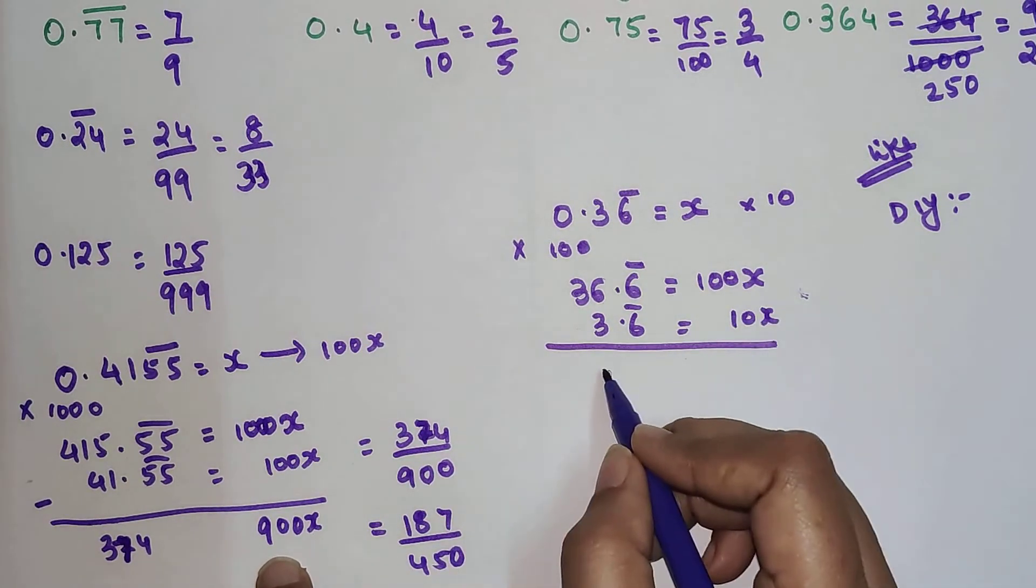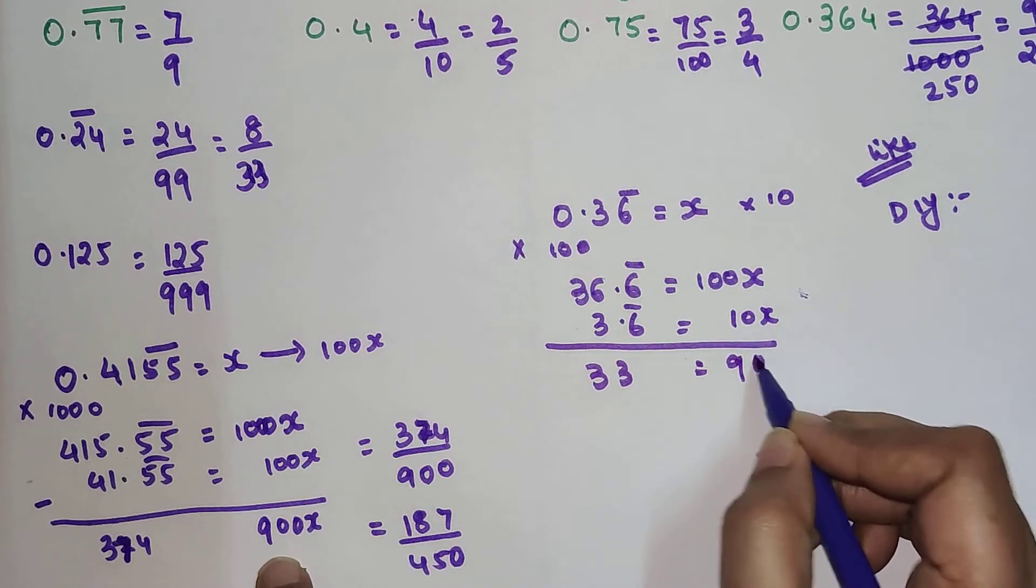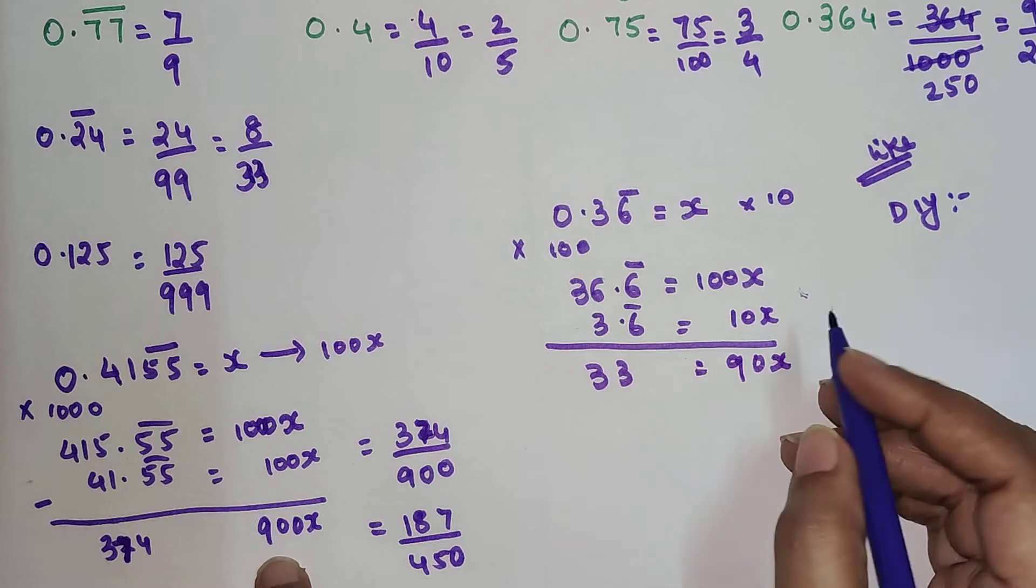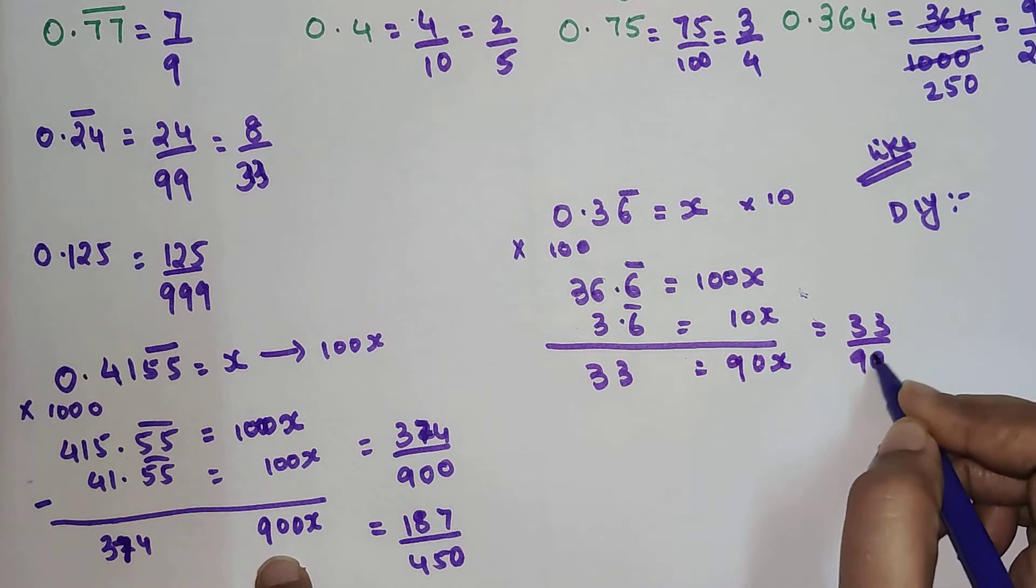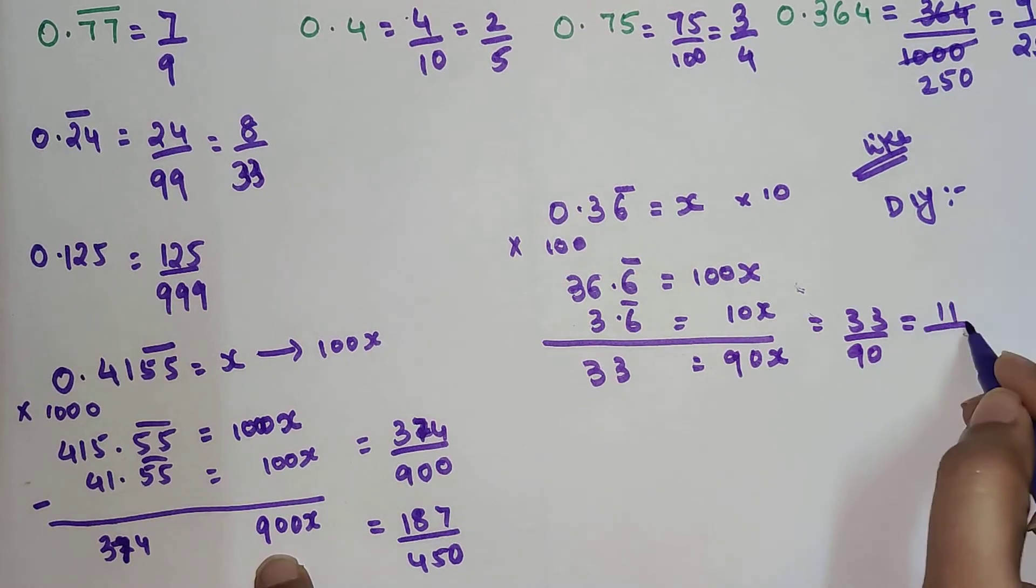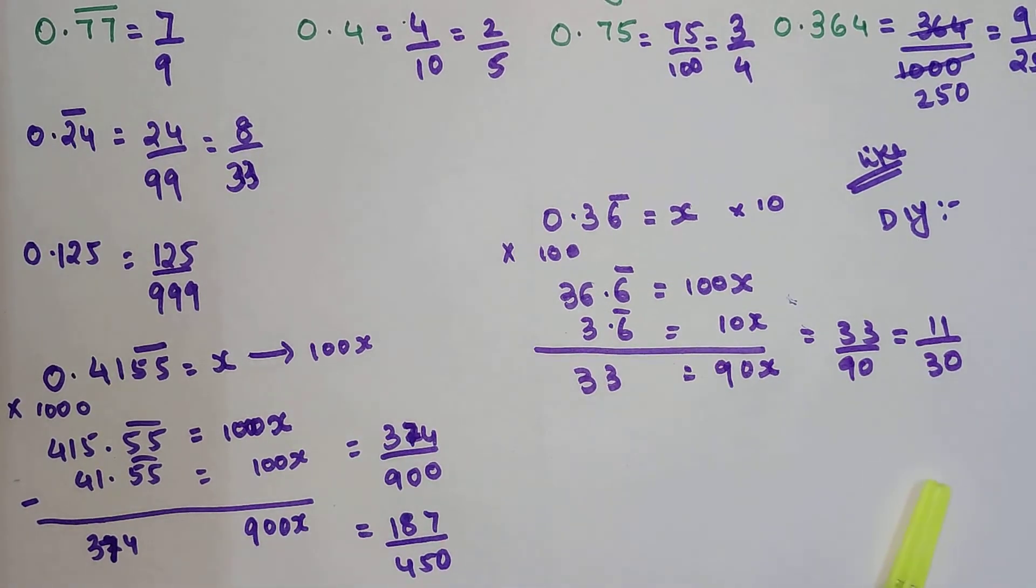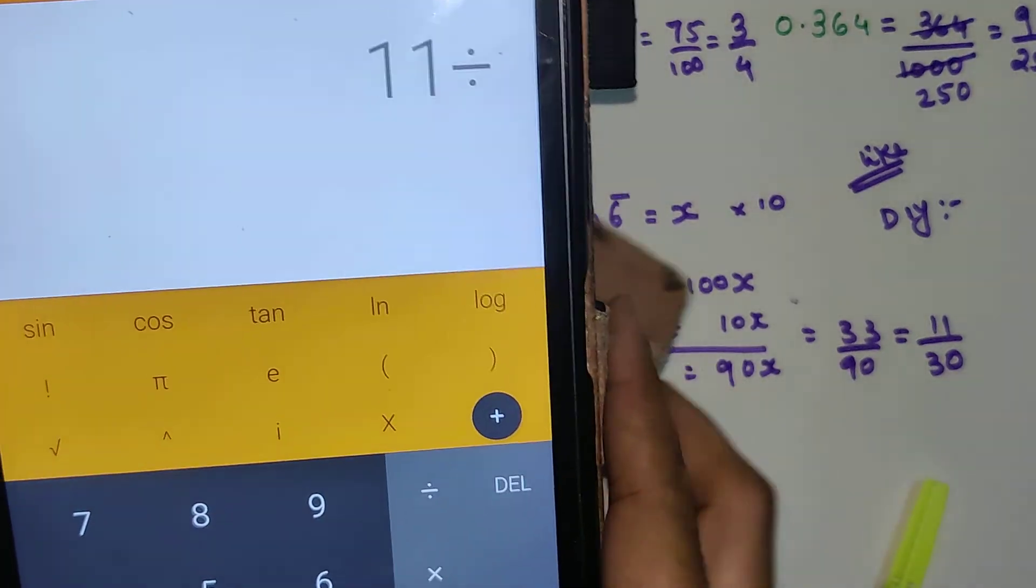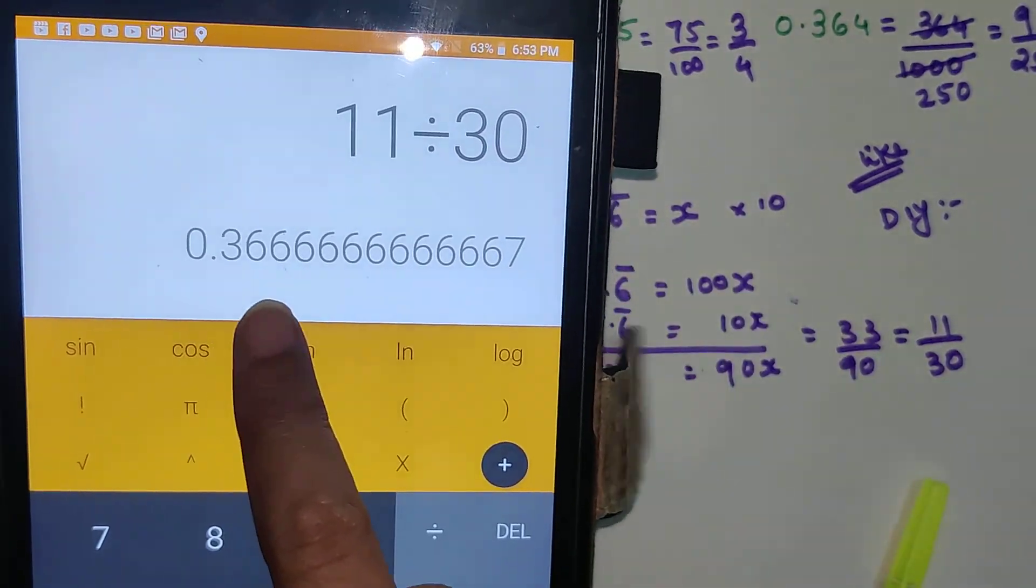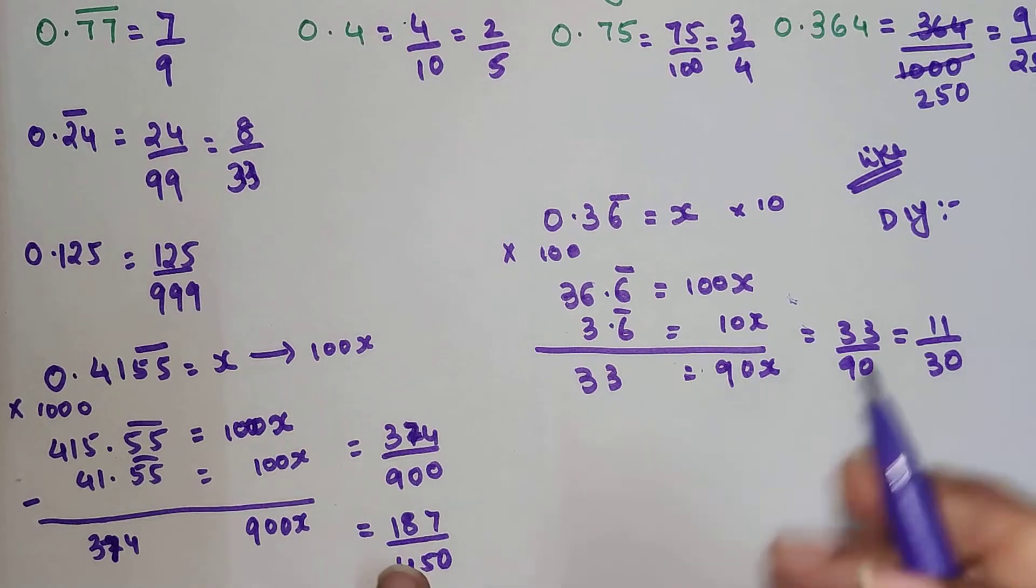So here this will be 33 equals 90x. Your final answer will be 33 upon 90, which will be nothing but 11 upon 30. If you want, we can have a look at this as well. We will divide 11 by 30, and our answer is 0.3666666. I hope you all got the hang of it.